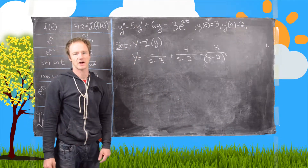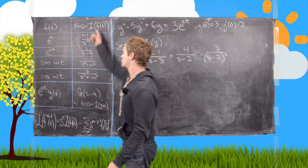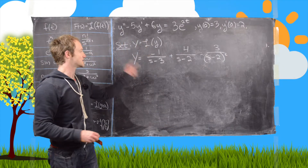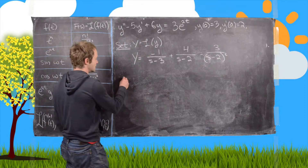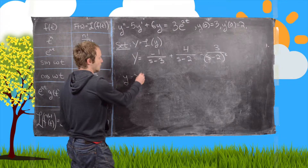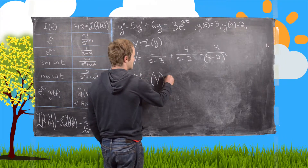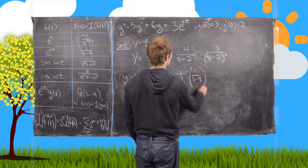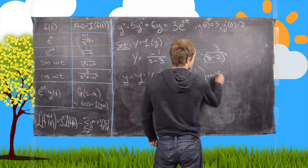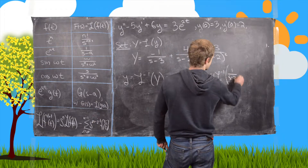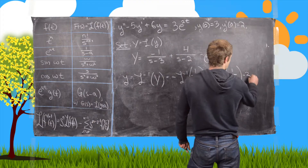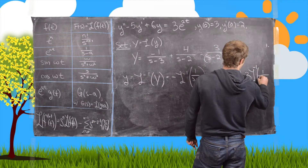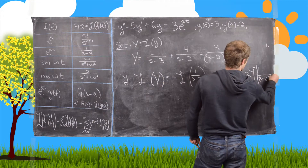We've rewritten this using partial fraction decomposition into terms that match the right-hand side of the Laplace transform chart. Now we apply the inverse Laplace transform: little y equals the inverse Laplace transform of capital Y, which is negative the inverse Laplace transform of 1 over s minus 3, plus 4 times the inverse Laplace transform of 1 over s minus 2, minus 3 times the inverse Laplace transform of 1 over s minus 2 squared.